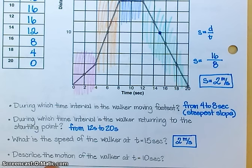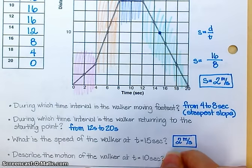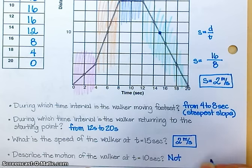Describe the motion of the walker at t equals 10 seconds. Right here. Not moving. How do you know? It's a horizontal line. There's no change in distance over that time interval.